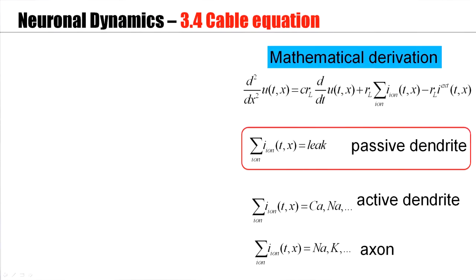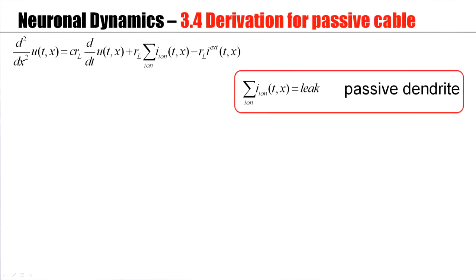A passive dendrite means that I only have an ohmic current — a current that corresponds to Ohm's law — a current that does not give rise to action potentials. That would be an active current, like the currents we have in the soma or in the Hodgkin-Huxley model. So let's look at this passive dendrite and derive the cable equation for that case.